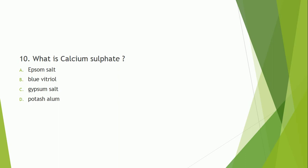Question number 10: What is calcium sulphate? The correct answer is option C — calcium sulphate is gypsum salt.